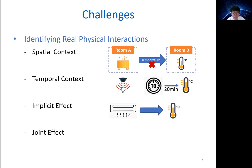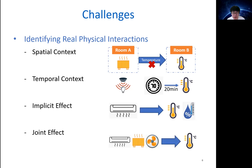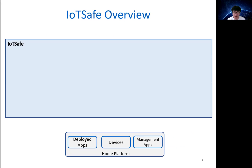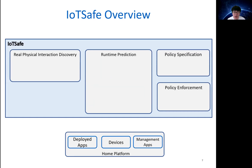The implicit effect represents a device having multiple or unexpected physical impacts. For example, AC heating not only increases the temperature but also implicitly reduces relative humidity. Joint effect means multiple devices working at the same time; for example, when three devices heat simultaneously, the temperature can increase more rapidly. To address these challenges, we propose IoT Safe, which includes three major components: real physical interaction discovery, runtime prediction, and policy specification and enforcement.